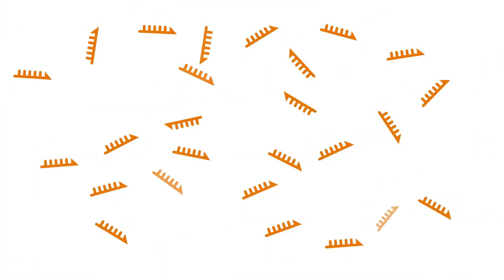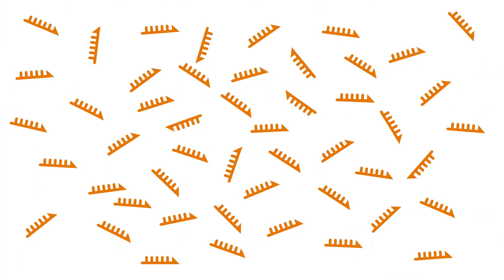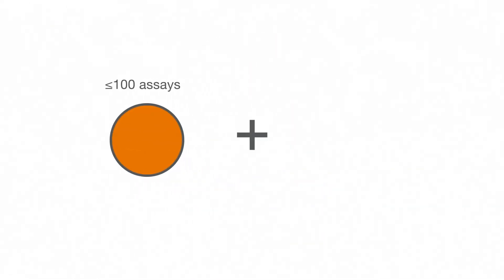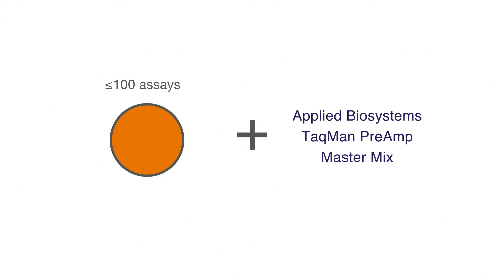We do this by creating a pool of primers — up to 100 pairs in all — that preamplify the cDNA using a specialized real-time PCR master mix for anywhere between 10 to 14 cycles.